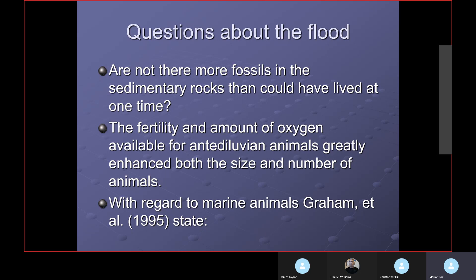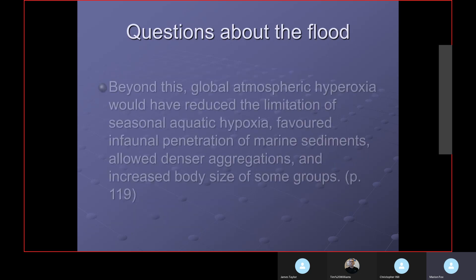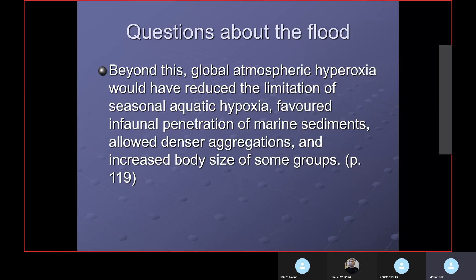With regard to marine animals, Graham et al. state — cited in the book — that global atmospheric hyperoxia (hyper from the Greek meaning 'greater') would have reduced the limitation of seasonal aquatic hypoxia. Hyperoxia is greater oxygen level; hypoxia, from the Greek hupo meaning 'under,' is lesser oxygen.